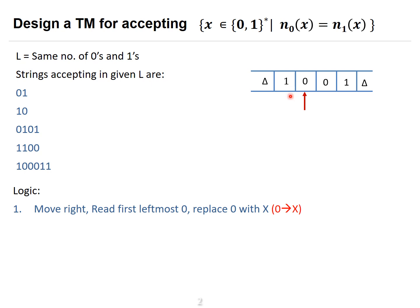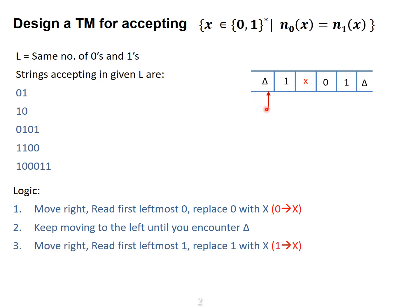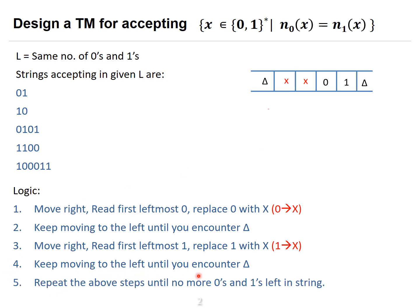Once you get the leftmost zero, replace it with X. Then the next step of the logic is to keep moving to the left until you encounter a delta. Then again move right to find the first leftmost one. Once you find it, replace the leftmost one with X as well. Then keep moving to the left until you encounter the delta again.